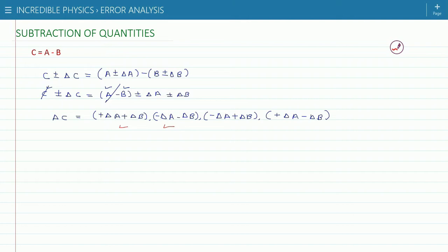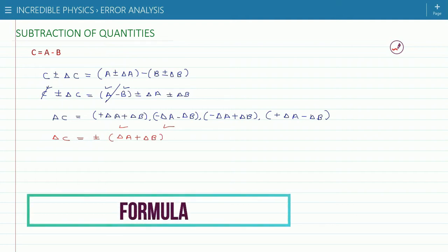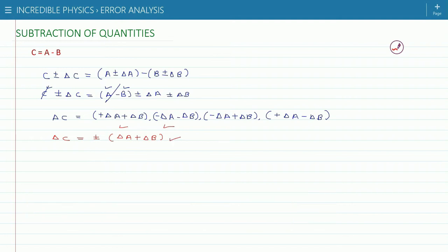So we can write delta C equal plus minus delta A plus delta B, which is the maximum permissible error of the quantity which is the result of the subtraction of two quantities.